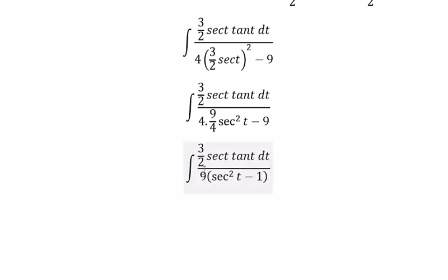So we have 3 over 2 divided by 9, and you got about 1 over 6.